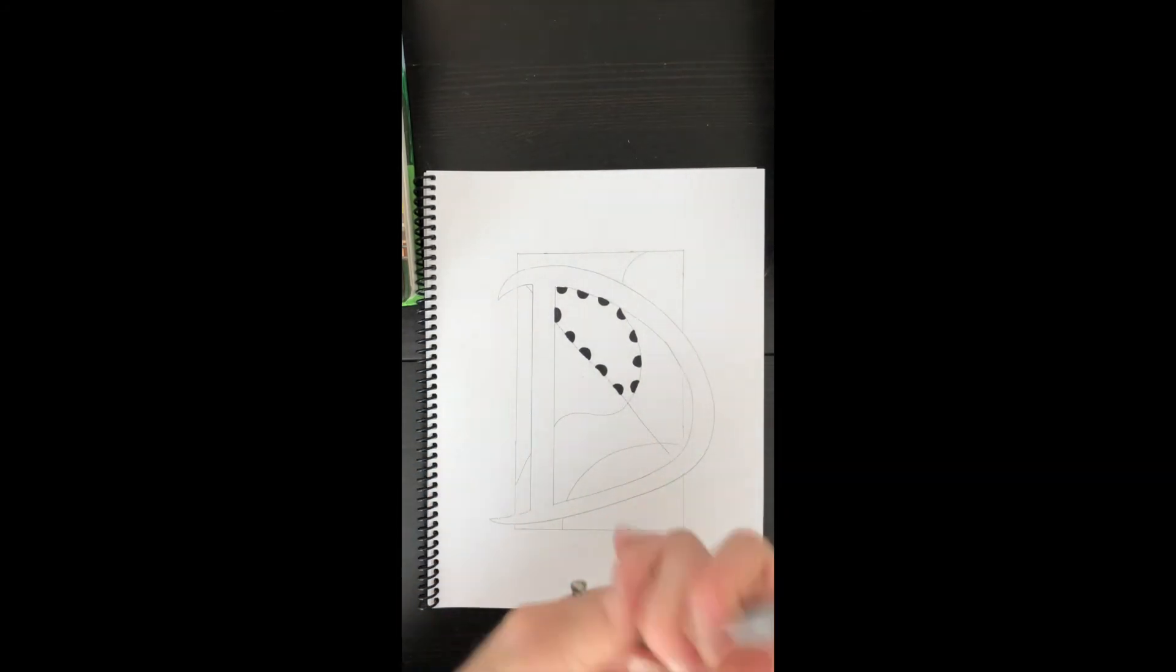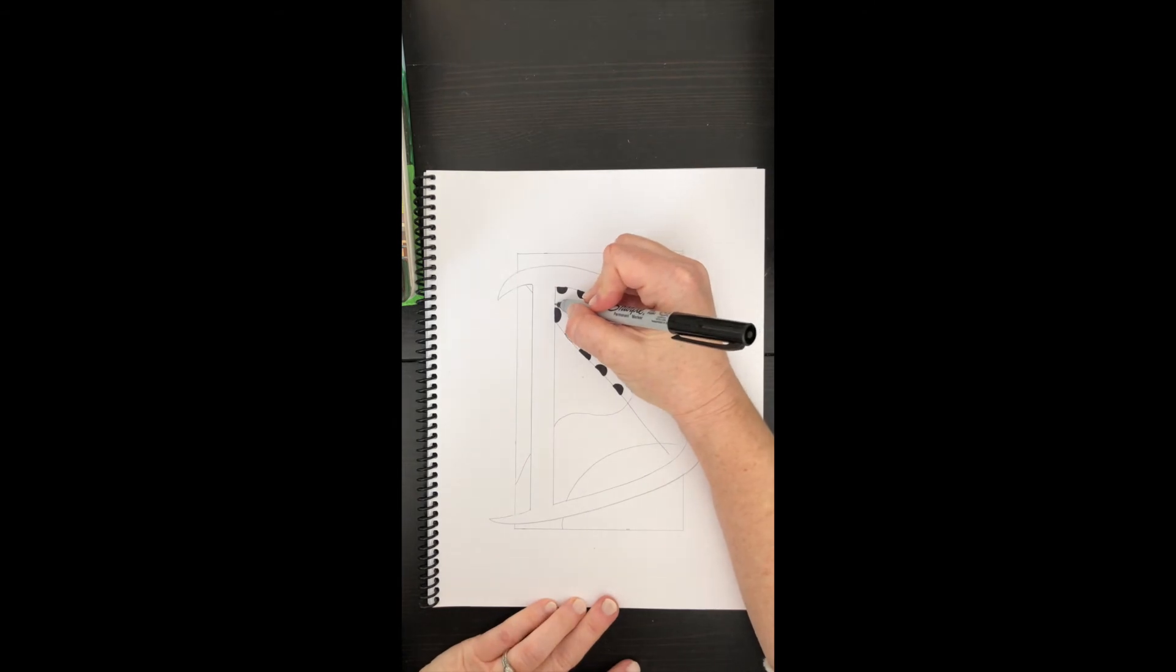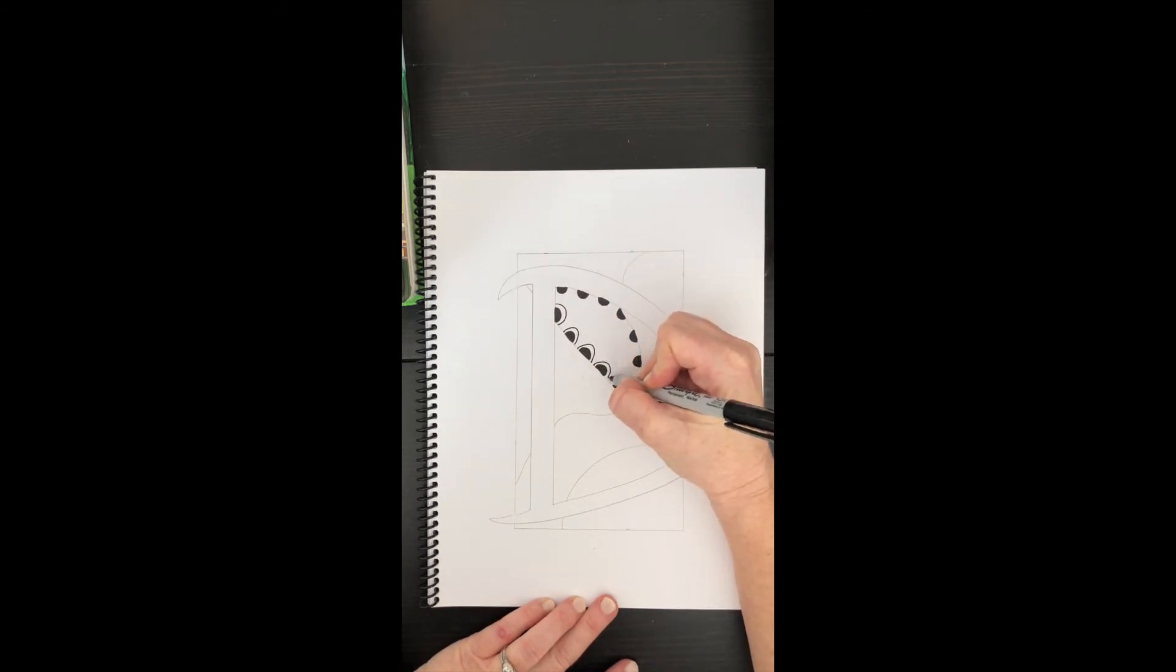Now I'm going to use my thin pen again to make another arch over each of these shapes. I'm going to go around in a circle until I fill up the space. Now I'm going to do it again.